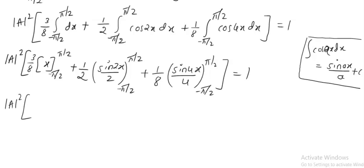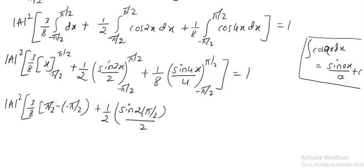Now, mod A squared: for the 3 by 8 term, applying limits gives (pi by 2 minus (minus pi by 2)). For the 1 by 2 term: sin(2 times pi by 2) divided by 2 equals sin pi divided by 2, which is 0. Minus sin(2 times minus pi by 2) divided by 2 equals minus sin(minus pi), and sin of minus pi is minus sin pi, which is also 0.